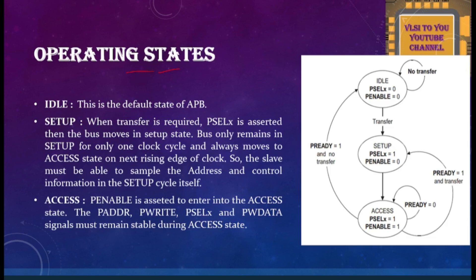Now coming to the operating states of APB. If you see the figure here, APB consists of three operating states: idle, setup, and access. The figure resembles a state machine. Among the various applications of state machines, APB protocol is one. In this FSM we will describe how the operating states transfer from one state to another — how the state moves from one state to the next in APB.